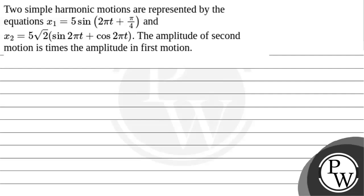Hello. Let's read the given question. The question states that two simple harmonic motions are represented by the equations: x1 equal to 5 sine (2πt + π/4), and x2 equal to 5√2 times (sine 2πt plus cos 2πt). The amplitude of the second motion is how many times the amplitude of the first motion?